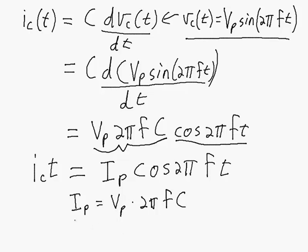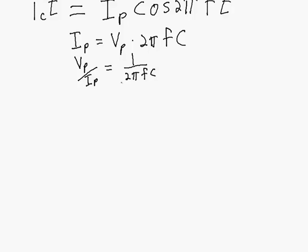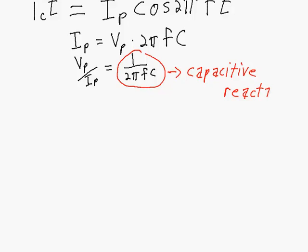Or to look at it another way, if we rearrange this equation, we get peak voltage over peak current is equal to 1 over 2πfc. And this relationship between peak voltage and peak current — that number — we call the capacitive reactance. This describes how the peak voltage and peak current relate to each other in and across a capacitor. So capacitive reactance — we give it the symbol X with a little subscript c to indicate that it's for a capacitor.